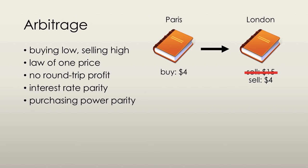The law of one price states that if an item is traded in more than one place, then the price will be the same in all locations. If a good was more expensive in London than Paris, an investor would purchase that good in London for a cheaper price and sell it in Paris for a higher price, thus making a profit and equalizing the prices in the process. So the book that we bought in Paris will now sell for $4 in London, according to the law of one price.